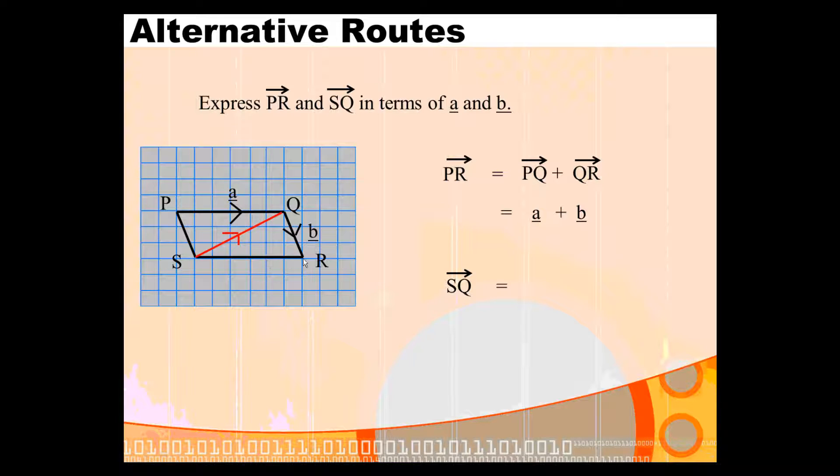So SR is the journey of vector A. Now we want to go from R to Q. That's in magnitude the same as vector QR, but the direction is different. Because we're going in the opposite direction to vector B, we call that negative B. So we end up with SQ being described as A minus B, and that's all there is to it.